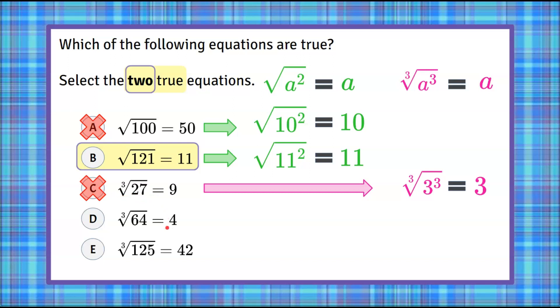Looking at choice D, we have the cube root of 64. We're going to write 64 as a power with an exponent of 3. That is 4 cubed. 4 times 4 is 16. 16 times 4 is 64. So 4 cubed is equivalent to 64. The cube root of 64, which can be written as 4 cubed, is 4. This equation is true. So we have our second equation.